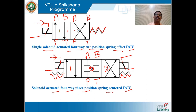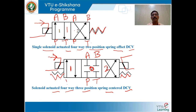When you energize the left coil, the valve shifts to position 1 — P is connected to A and B is connected to T.